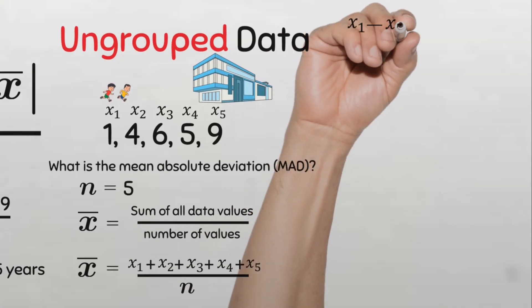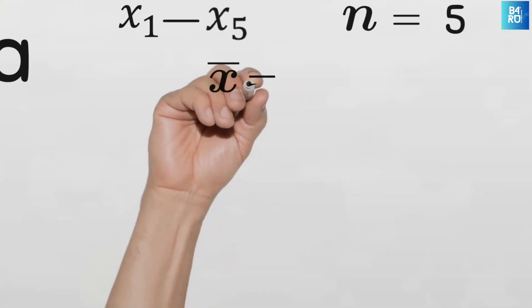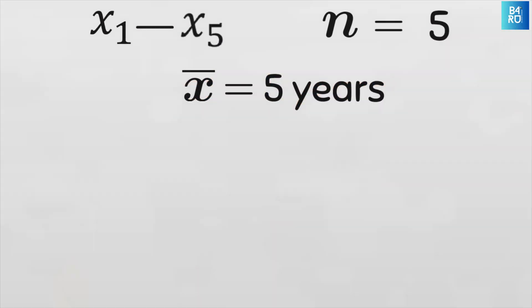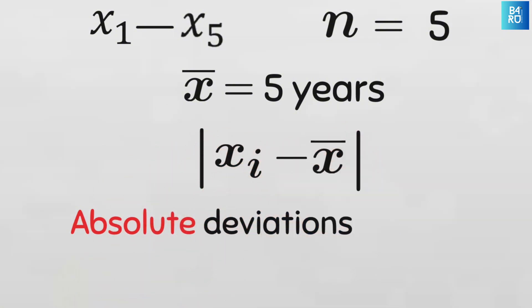So now we have x1 to x5, we have n as 5, and our mean x bar as 5 years. Now we just need to find the absolute distance between each value from the mean, i.e. we need to find the absolute deviations. And that's the modulus x subscript i minus x bar part of the formula.